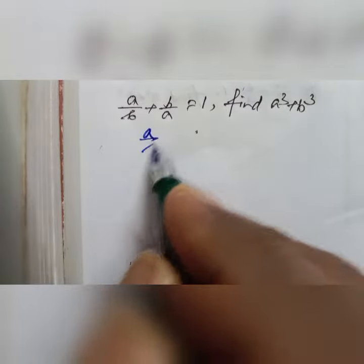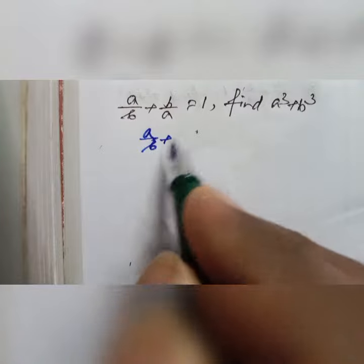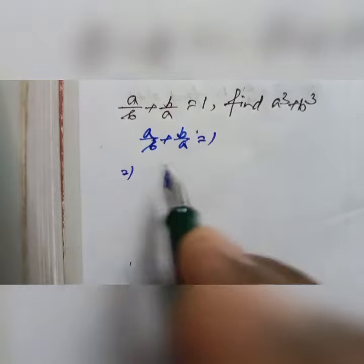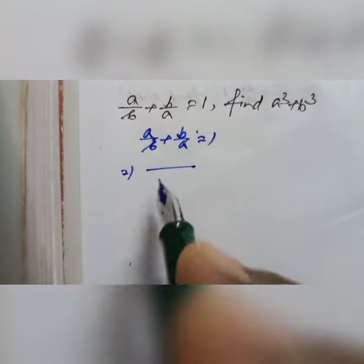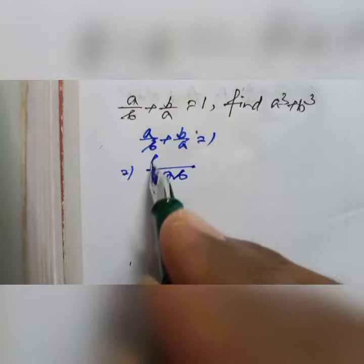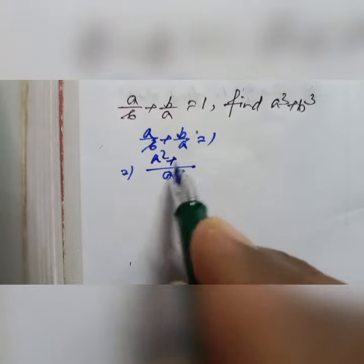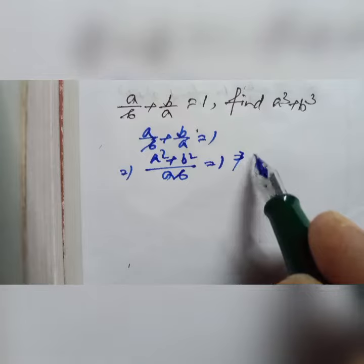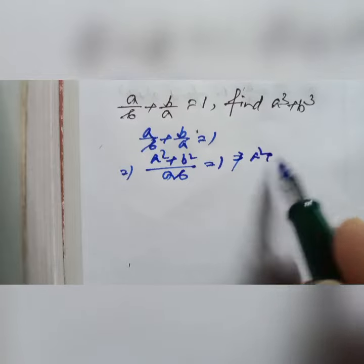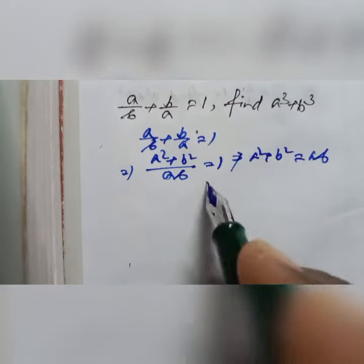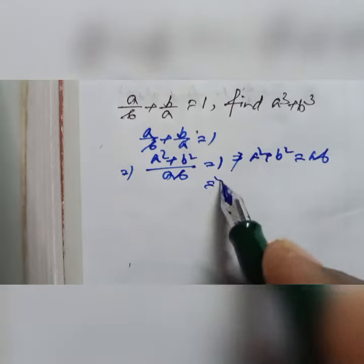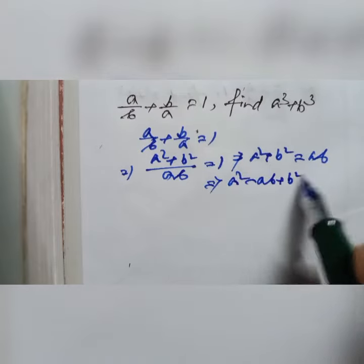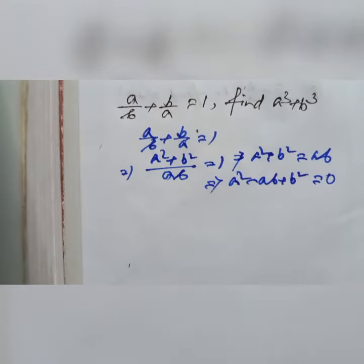It is given that a by b plus b by a equals to 1. Taking LCM as ab, we get a square plus b square equals to 1, which means a square plus b square equals to ab. Therefore, a square minus ab plus b square equals to 0.